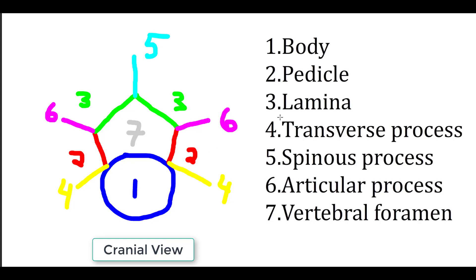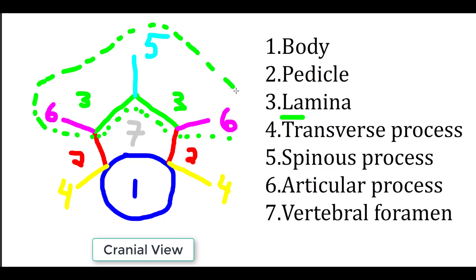One clinical note about the lamina: we include the articular process, the lamina proper, and the spinous process in our definition of the clinical lamina. We enclose all these structures with a dotted green line and refer to this as the clinical lamina, because during a laminectomy, this is the part of the vertebra that's removed to gain access to the spinal cord.